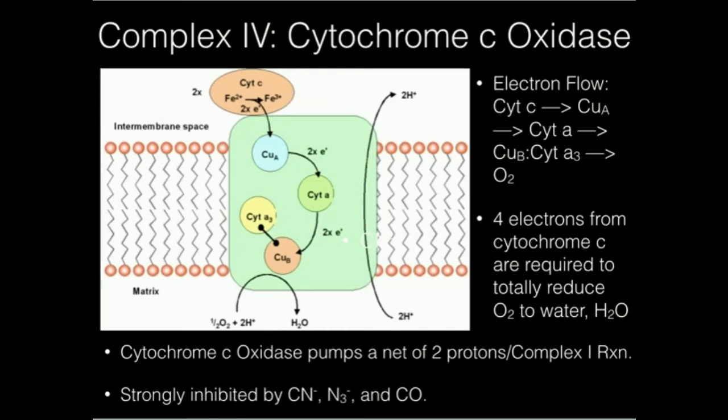Sort of like in plants we have the oxygen evolving complex or the water splitting complex. Well, this is the reverse. This is the oxygen splitting complex. This is where oxygen is going to be split into water. So electrons from copper B are ultimately going to be transferred to molecular oxygen.